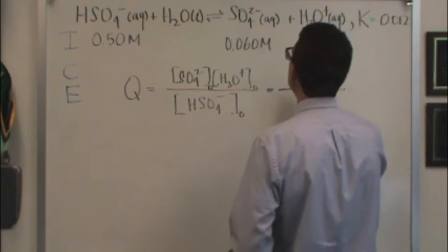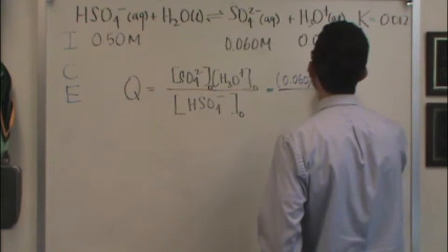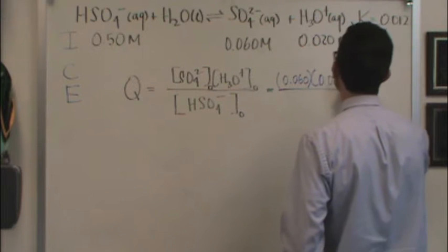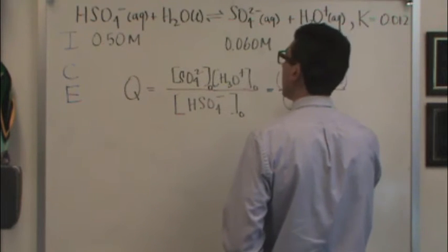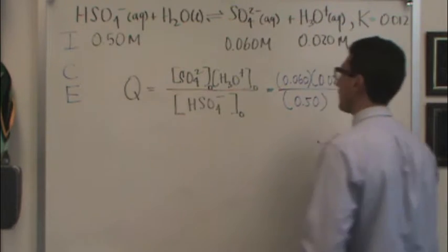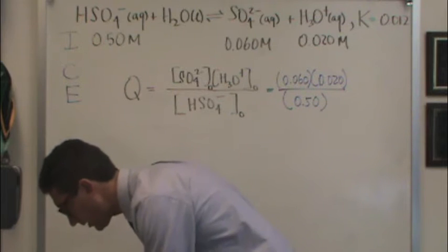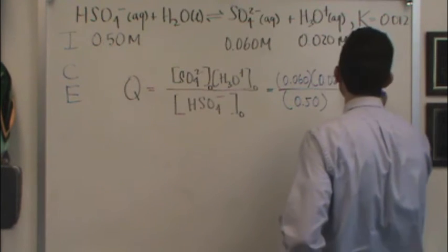Q is sulfate concentration which is 0.060 times the H3O plus concentration which is 0.020 divided by the bisulfate concentration of 0.50. We find this and I calculated Q to be 0.0024.